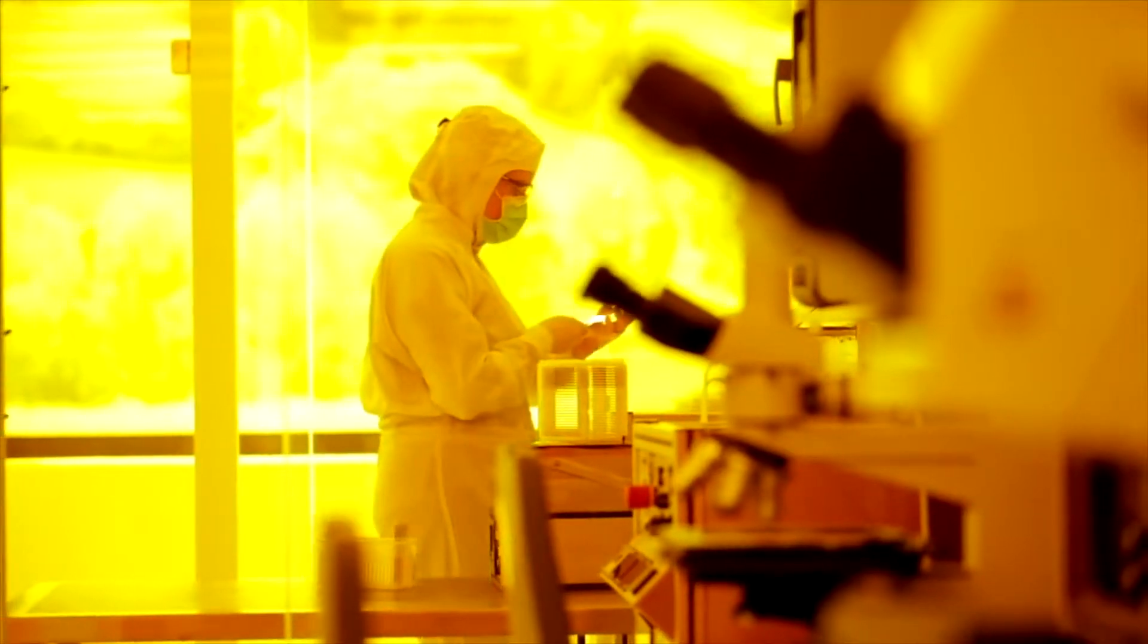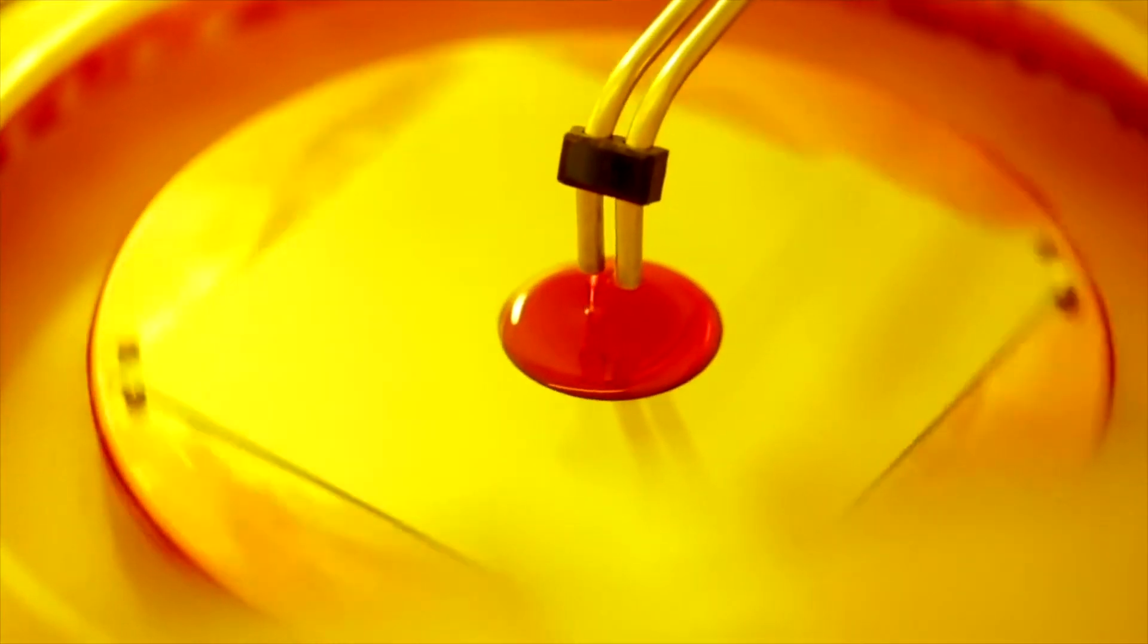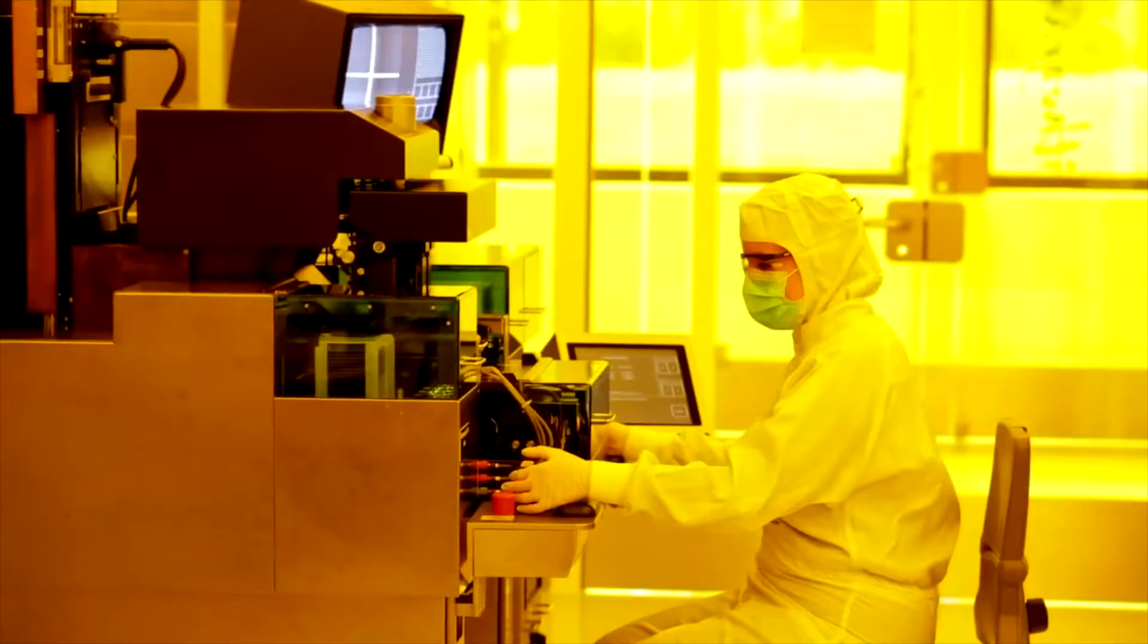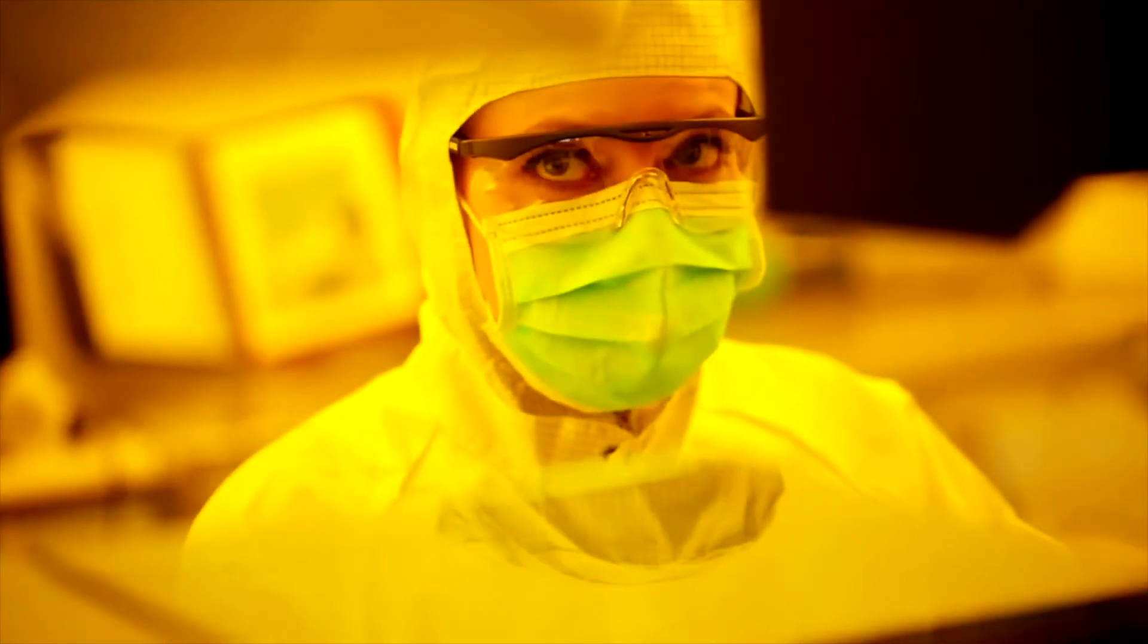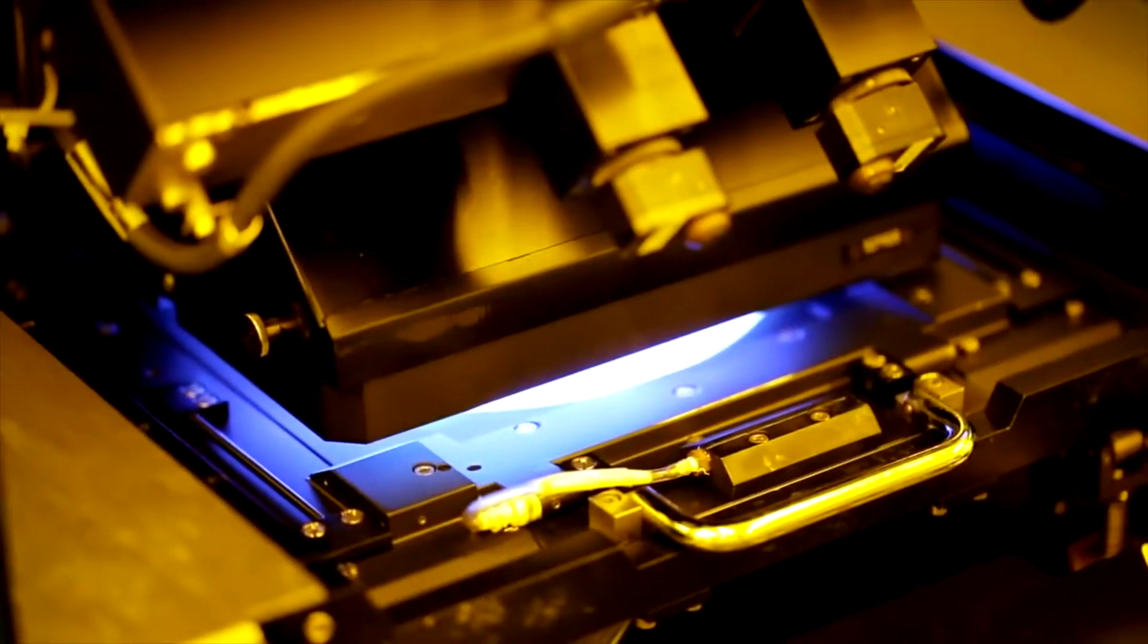The pattern of the sensor structure is defined by multiple steps: spin coating of a photosensitive resist, illumination of the photosensitive resist through a mask, developing the photoresist and etching. Finally, the photoresist is removed, leaving only the sensor structure on the chip.